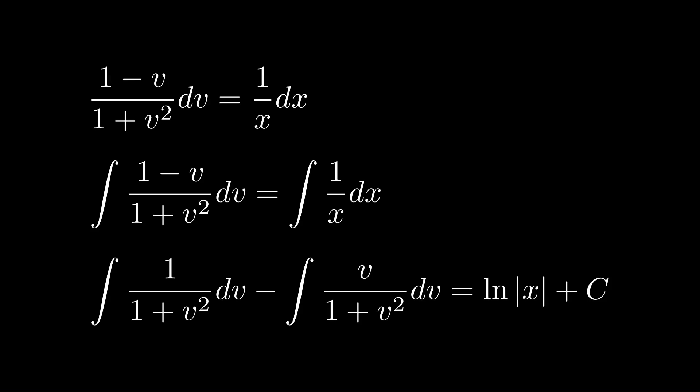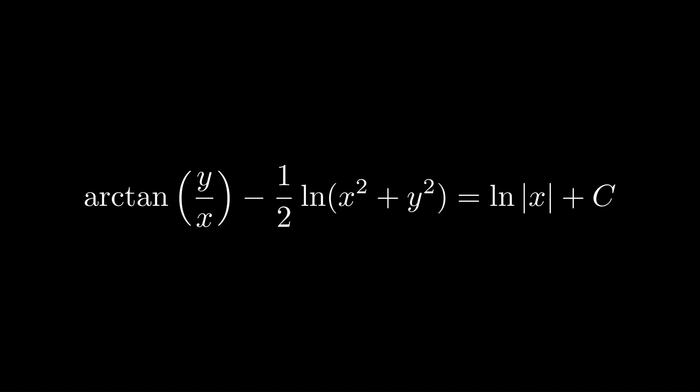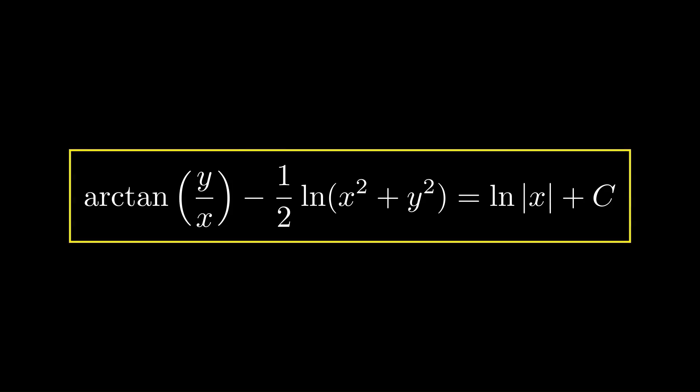Remembering the special integrals, we get arctan(v) minus (1/2)ln(x² + y²) — substituting back in for v — equals ln|x| + c. You could solve this explicitly, but it isn't strictly necessary.